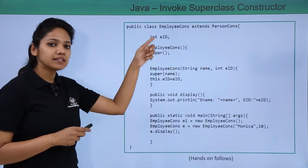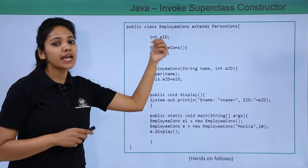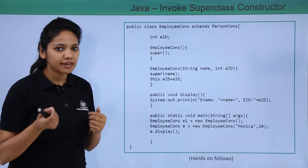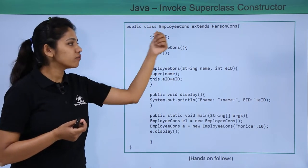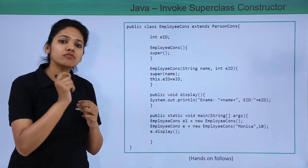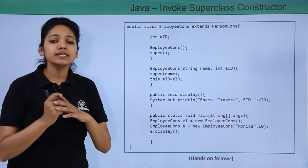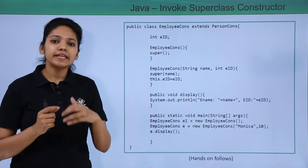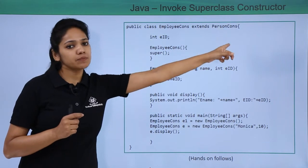Then we have created another class called EmployeeConstructor. In this class we have created a variable of integer type which is employee ID. We have created two constructors for this class. The first constructor will call the constructor from its parent class which has no parameters. To inherit the behavior of the parent class, we use the extends keyword followed by the parent class name.